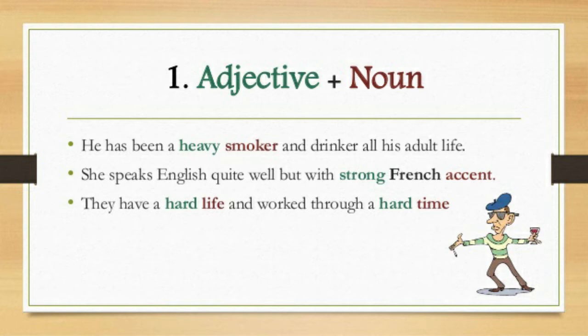The next example: 'She speaks English quite well but with a strong French accent.' Here 'strong' is the adjective and 'accent' is the noun. An accent refers to the modulation of voice in speaking, or articulation of syllables. So 'strong accent' — strong is the adjective, accent is the noun — is another adjective plus noun collocation.